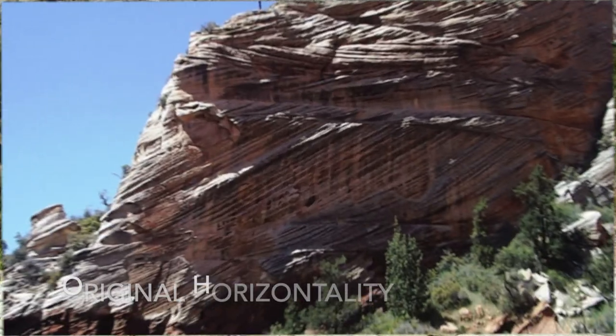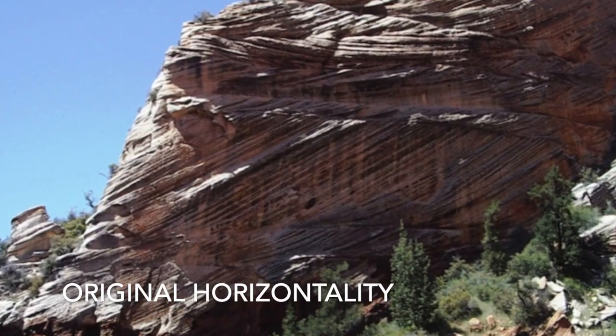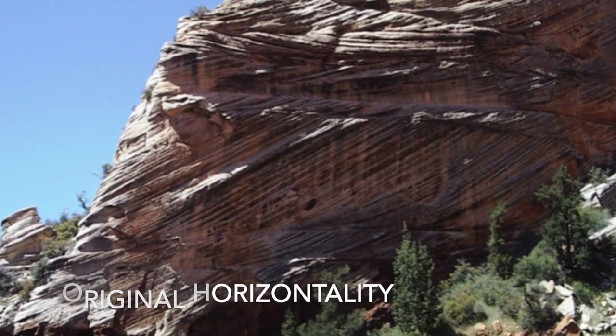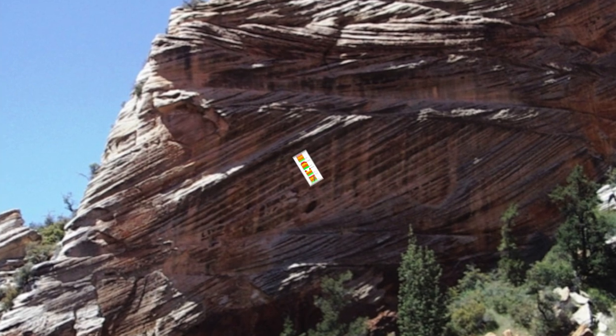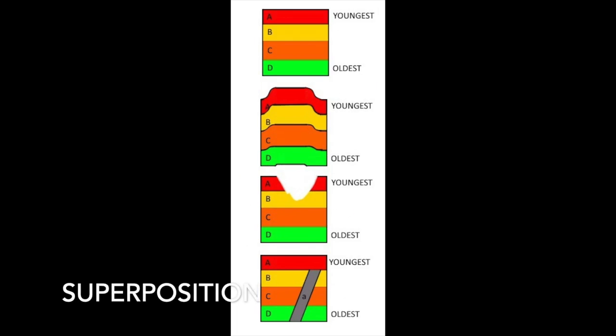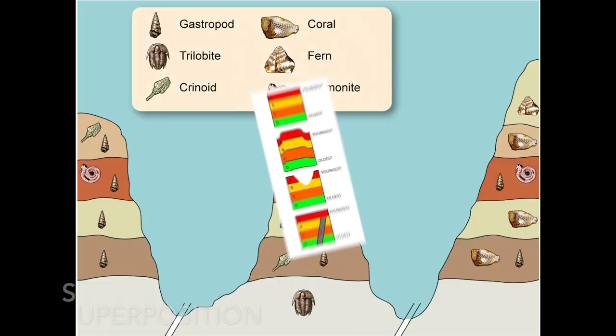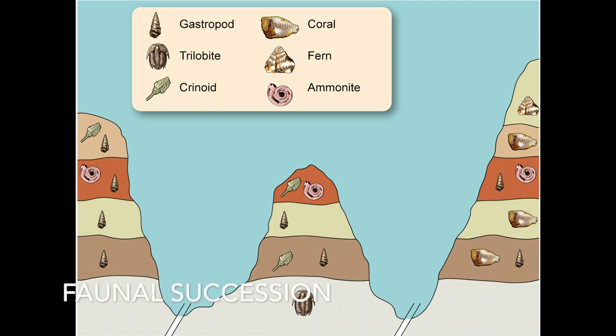The deposition of sedimentary rocks takes place according to a series of important principles, including original horizontality — where everything is initially deposited in a flat plane — superposition, where the oldest rocks are at the bottom unless overturned, and faunal succession.